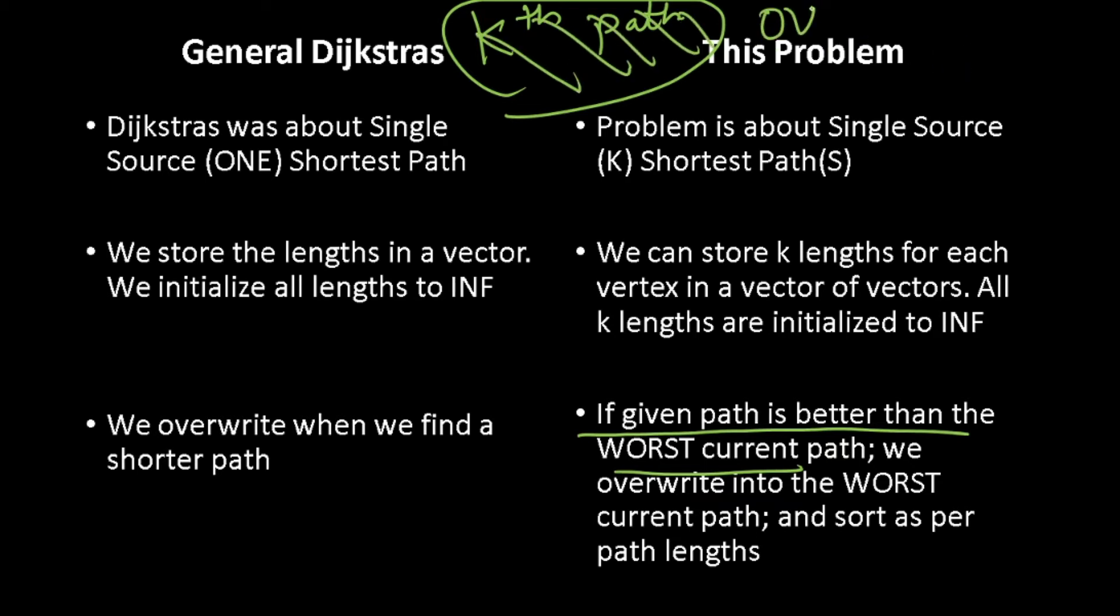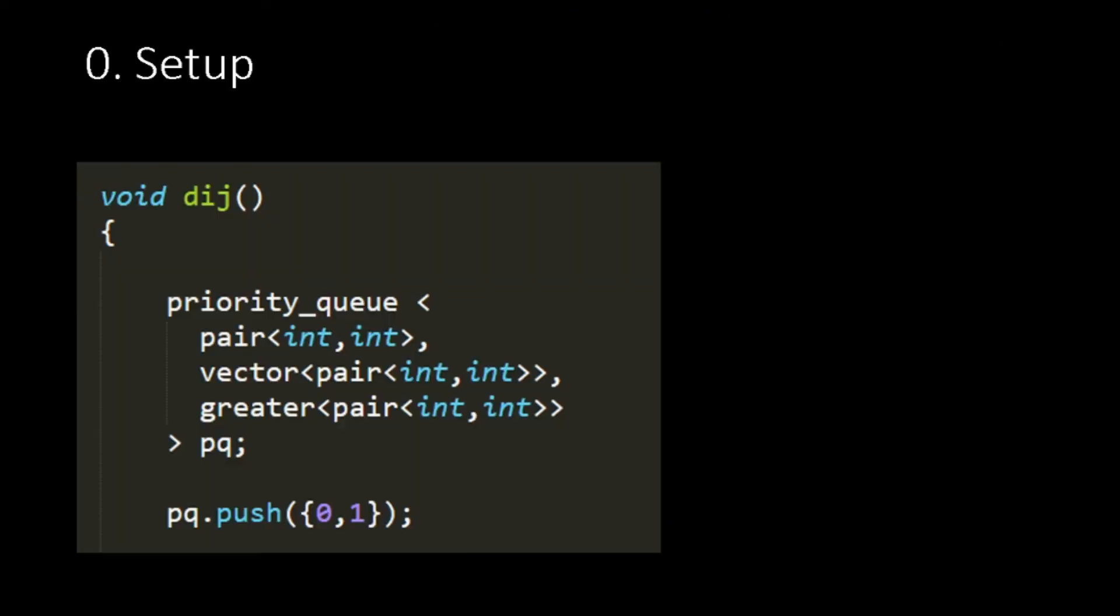After overwriting kth path, we then sort all the paths. Why is this step important? If we don't do this, the kth path won't have the worst path. So when we sort all paths, kth path will automatically have the worst path again. Things will be more clear when we look at the code.